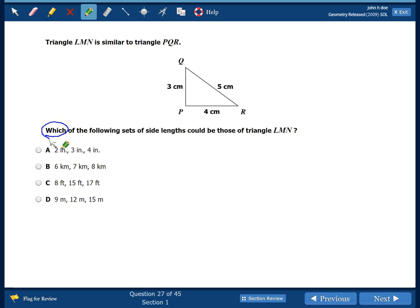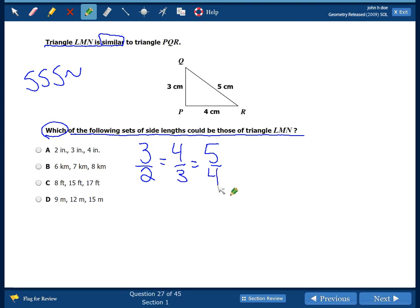So for this problem, it says which of the following sets of side lengths could be those of triangle LMN. Well, what's special about triangle LMN? Triangle LMN is similar to this triangle. So whenever we figure out similarity, we have side lengths, we should be thinking of side, side, side, similarity. So that means I'm going to write 3, 4, and 5, and I need these fractions to be equal. So I'm going smallest to largest. So is this equal to 2, 3, and 4? You should see that that isn't true, so A does not work. What about the next one? So we have 3, 4, and 5. Now we have 6, 7, and 8. Again, that one doesn't work.